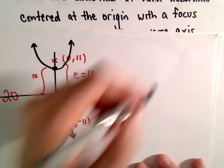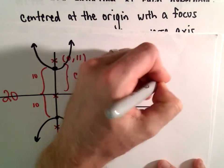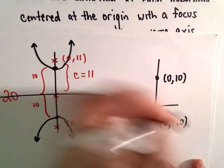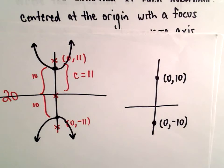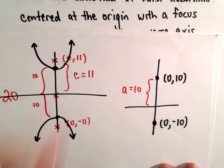So really, I know that my vertices will have to be at (0,10) and (0,-10). That distance to the vertices, that's what we label as a. So in this case, a is going to equal 10.